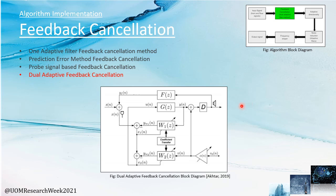When building a hearing aid, feedback cancellation plays a critical role. For this, we have used dual adaptive feedback cancellation among the reviewed algorithms, because it was the best algorithm we found according to the literature review. Here is the block diagram of that feedback cancellation method.